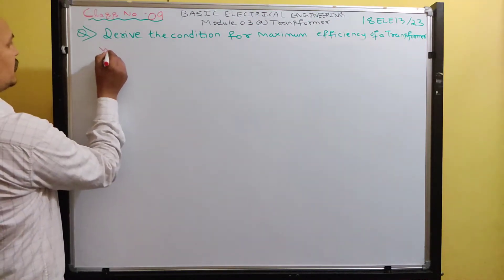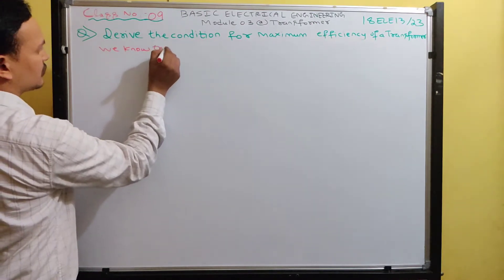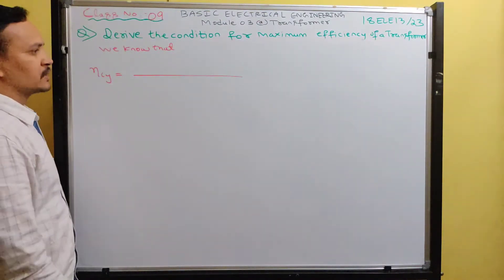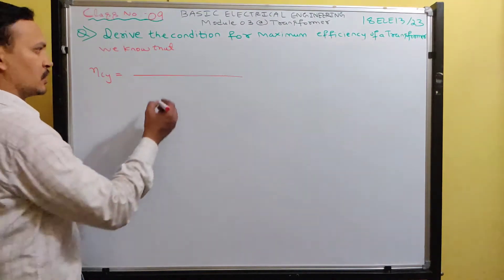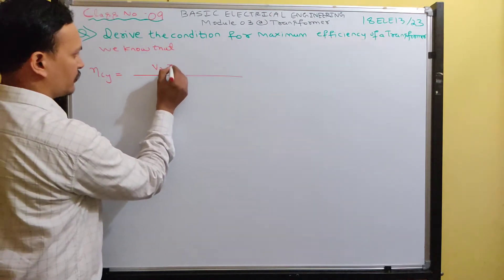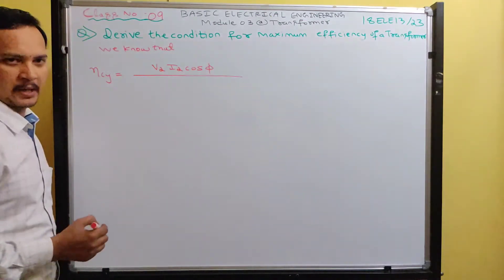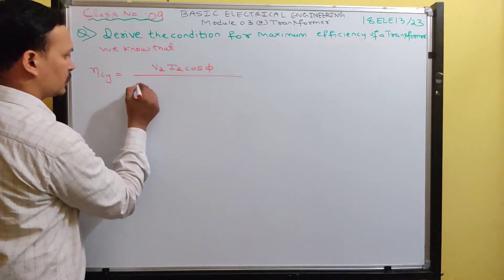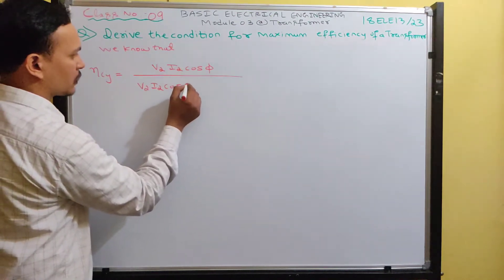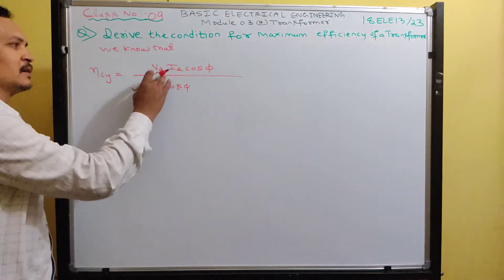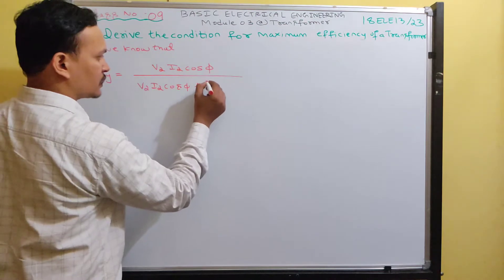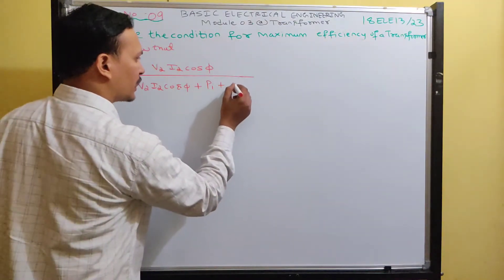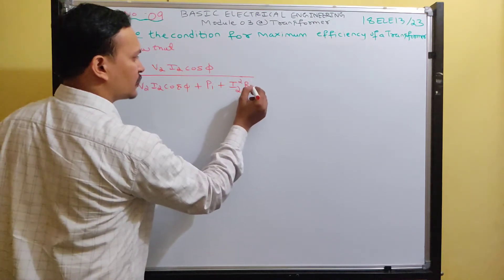We know that the efficiency of a transformer is given by output power divided by input power. Input power equals output power plus total losses. The numerator, output power, is V2·I2·cos φ. And input power is output power plus total losses, which includes iron losses plus full load copper losses. Full load copper losses I am going to write as I2²·R2e.